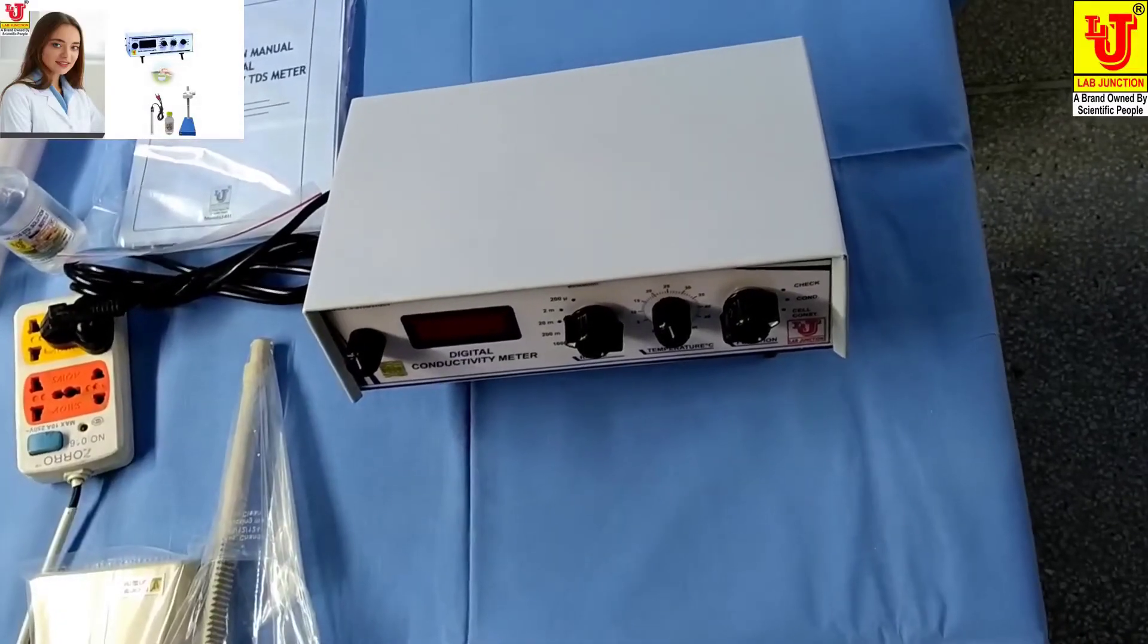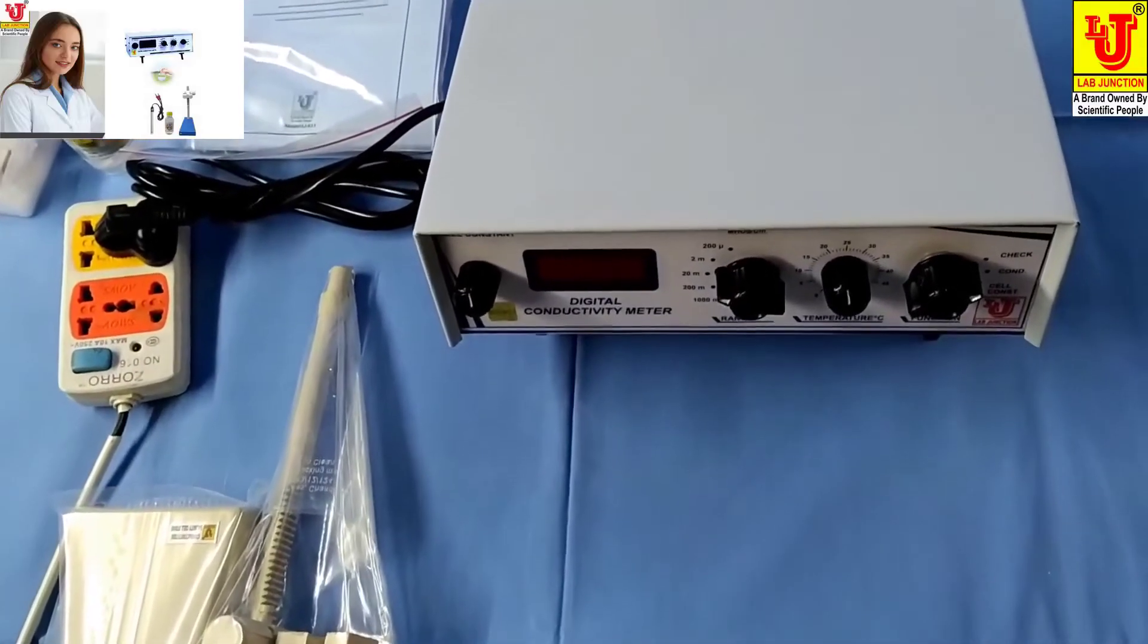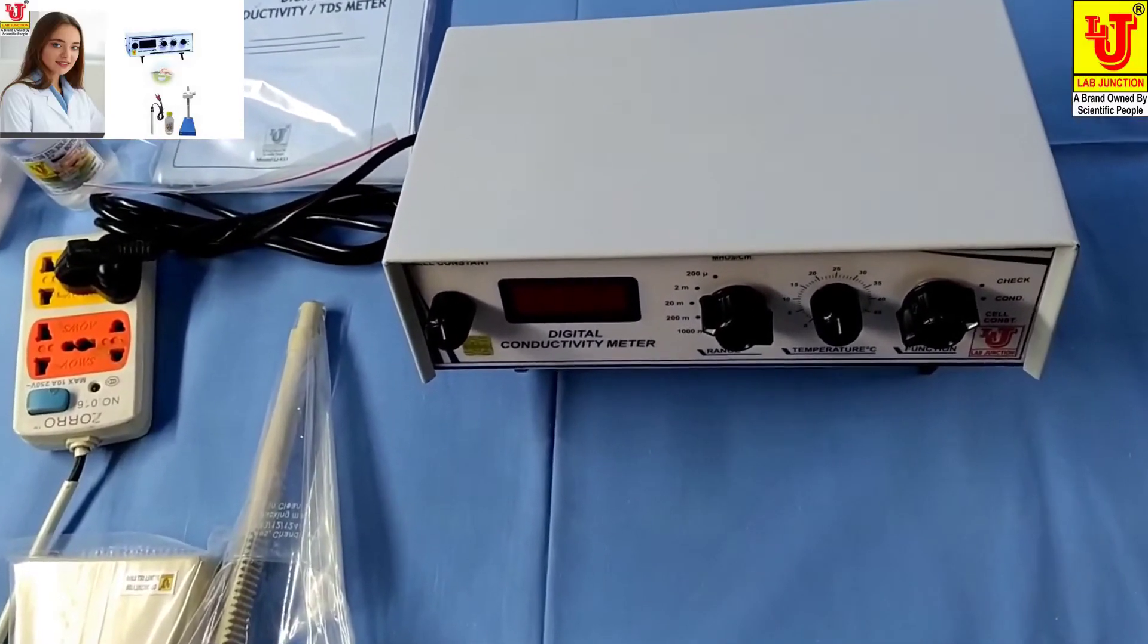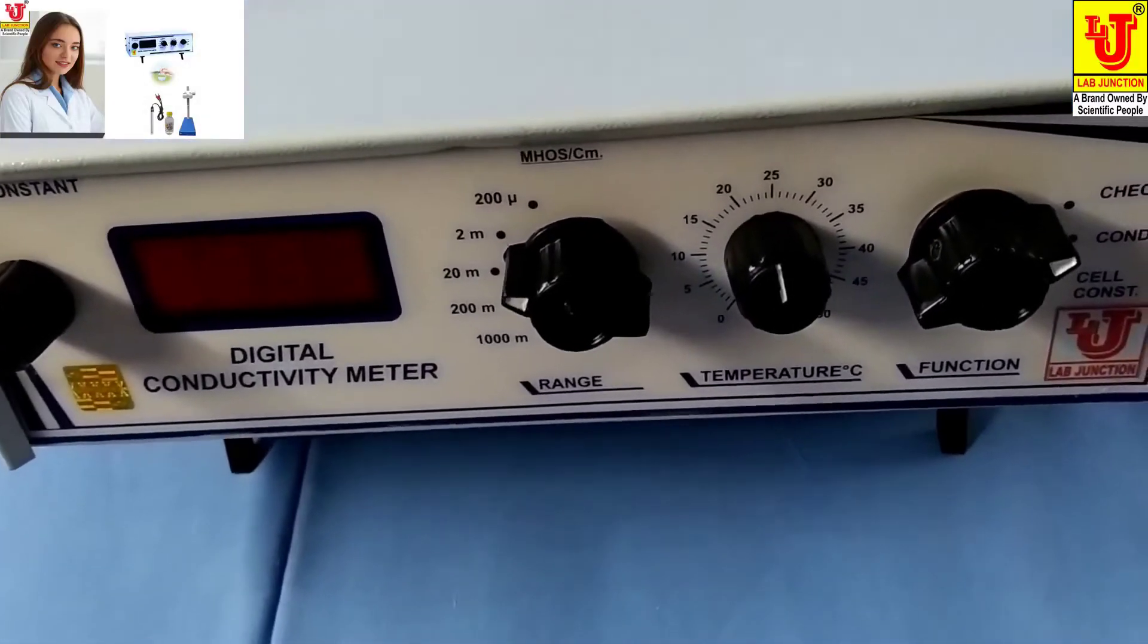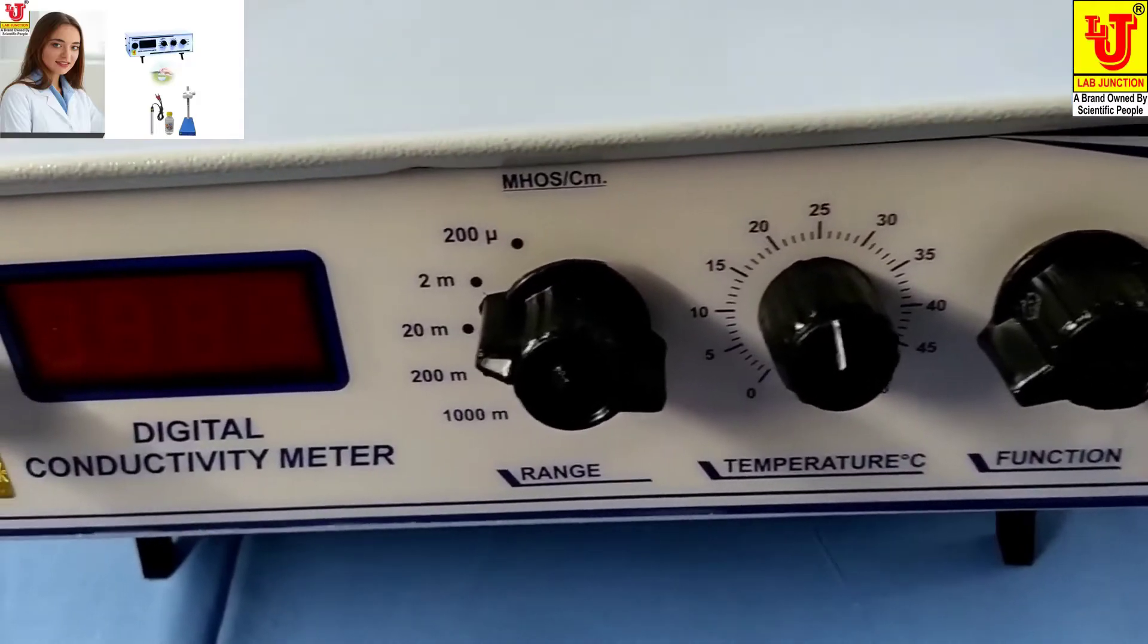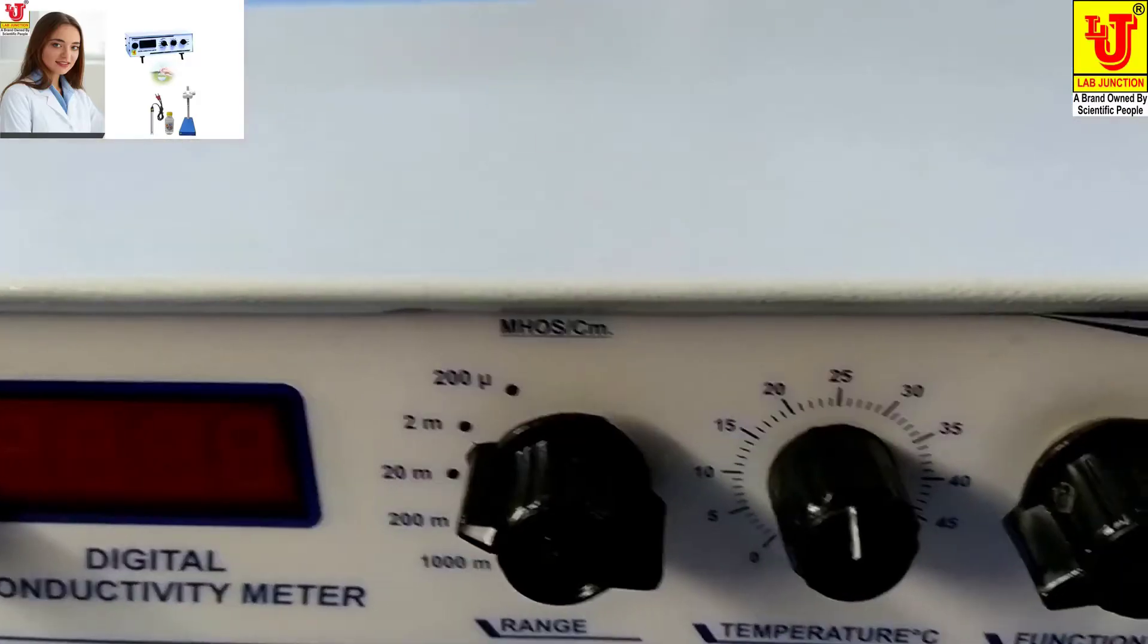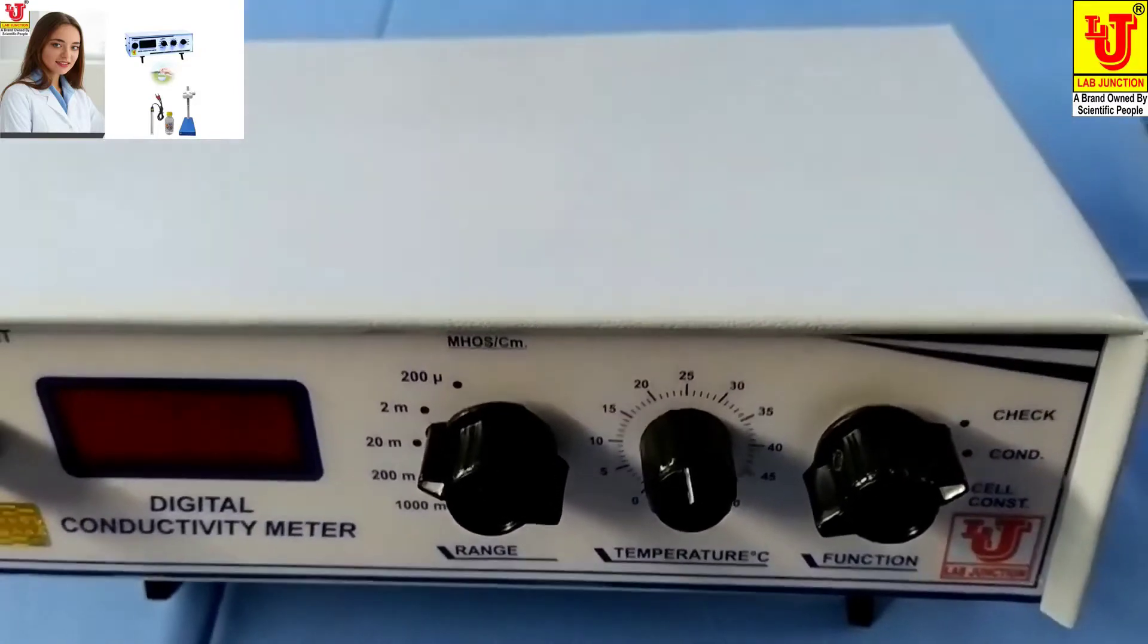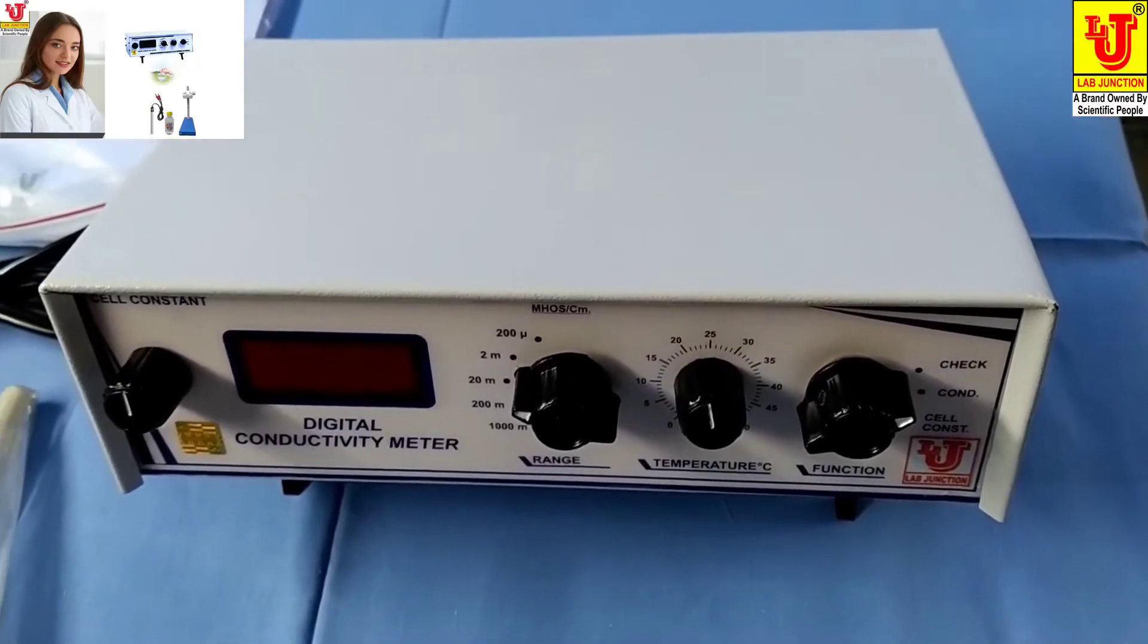Lab Junctions Digital Conductivity Meter. We have two models of digital conductivity meter: one model is LJ611, second model is LJ Alpha 06.